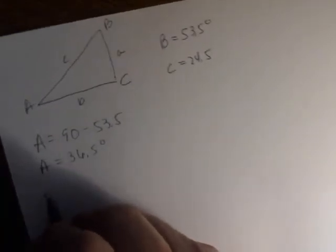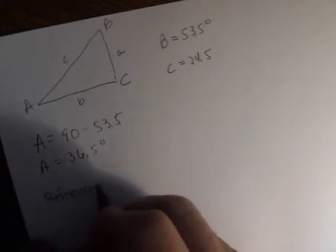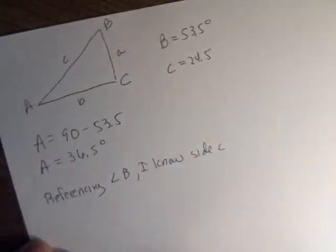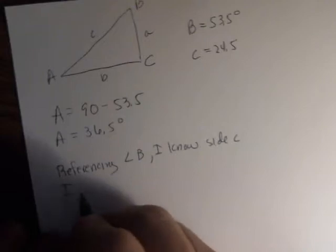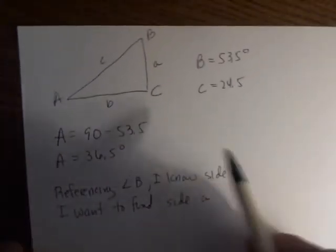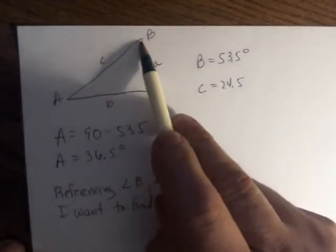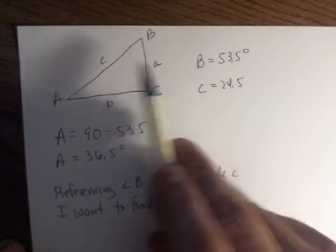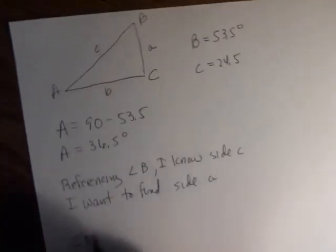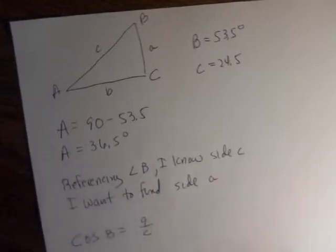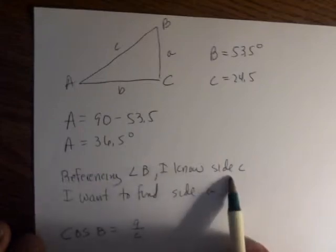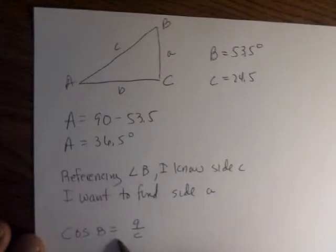So, remember I am referencing angle B. So, I know side C, I want to find side A. So, based on that information, I'm using angle B, side A is my adjacent side, side C is my hypotenuse. So, therefore, I must choose the cosine function, to where cosine of B is A over C. Okay, so you don't choose the trig equation first. First, you reference an angle, go by whatever side you know, or sides you know, and then choose your appropriate trig equation.